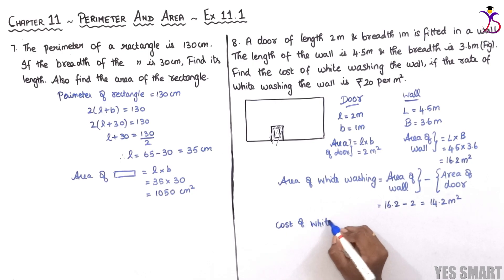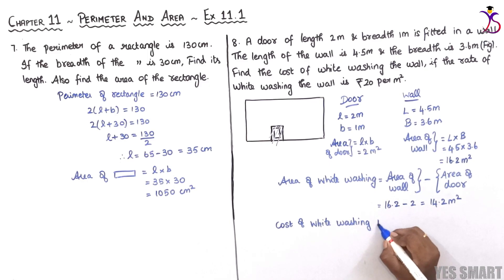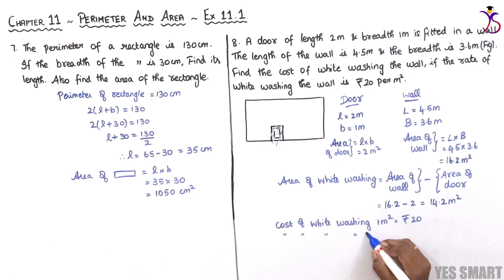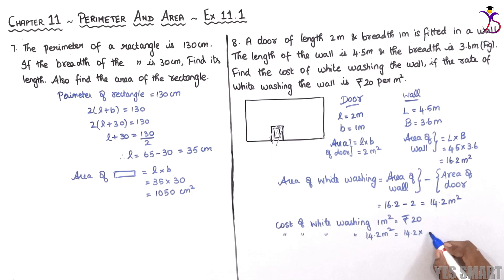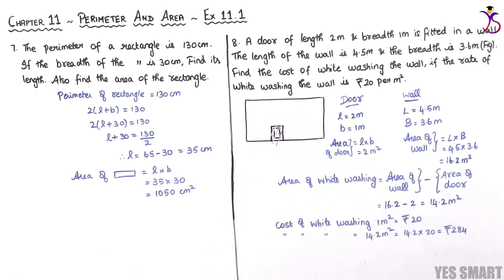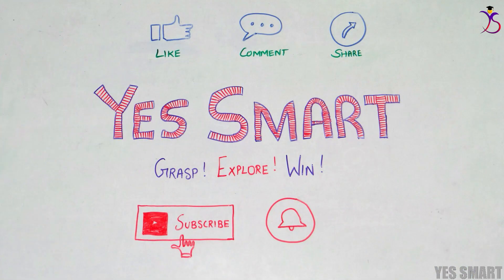Cost of whitewashing 1 meter square is rupees 20. We have to find the cost for 14.2 meter square, so we multiply 14.2 into 20. On multiplying, we get rupees 284. So the cost of whitewashing the wall excluding the door is rupees 284. With this we have completed this exercise. Thank you all for watching Smart Grasp: Explore and Win. Stay tuned for more videos.